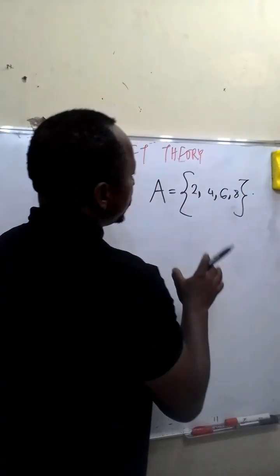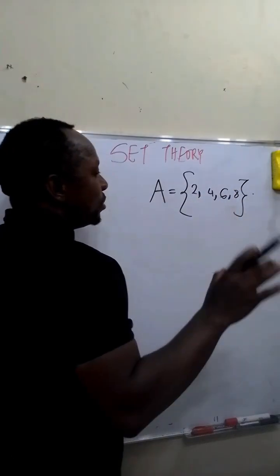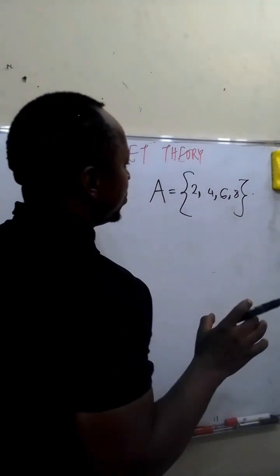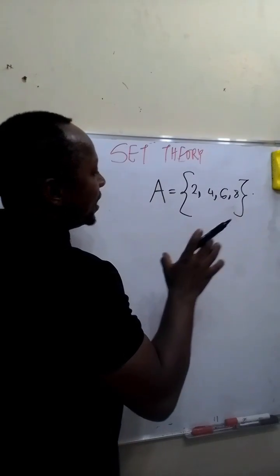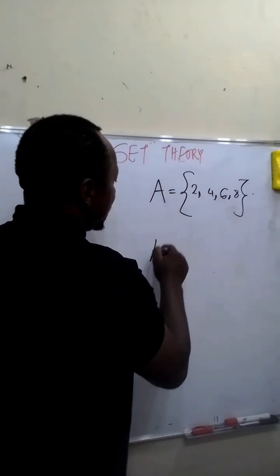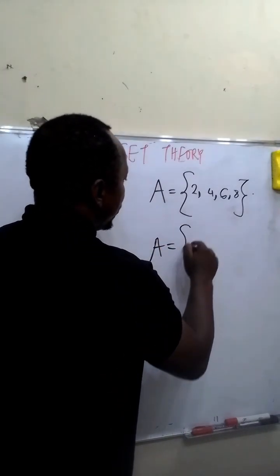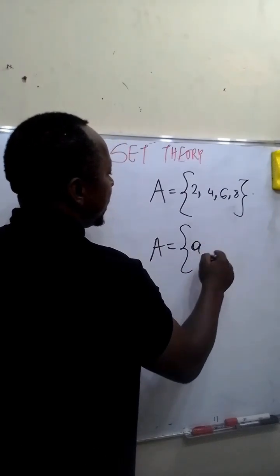Also, we need to note that elements are represented with small letters. For example, if we want to write a set of vowels, let's say A will be equal to our curly bracket is small letter a,